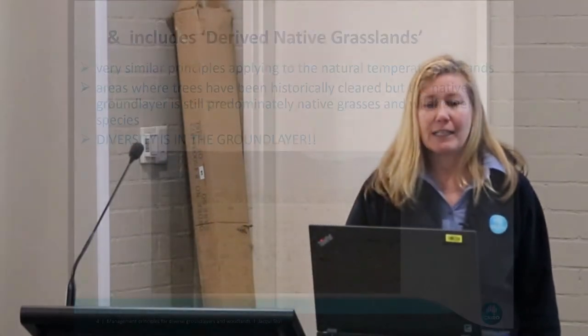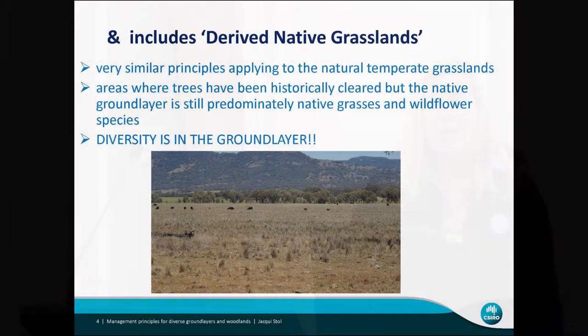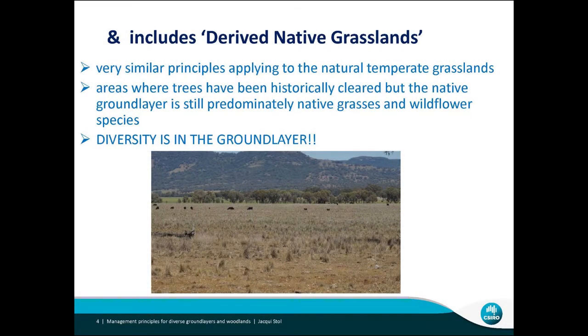This includes derived native grasslands, which are similar to the natural temperate grasslands. These are areas that are historically cleared but the native ground layer is still predominantly native grasses and wildflowers. With these systems, the diversity is huge, and it's all in that ground layer — you've really only got half a dozen or a dozen tree and shrub species on top.